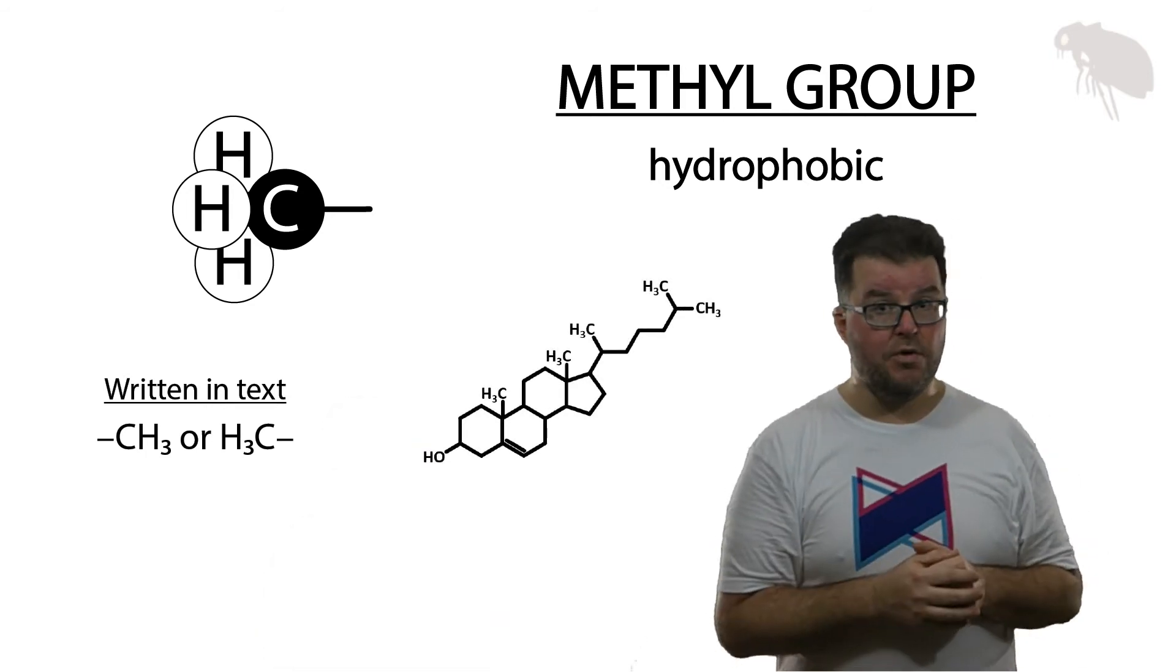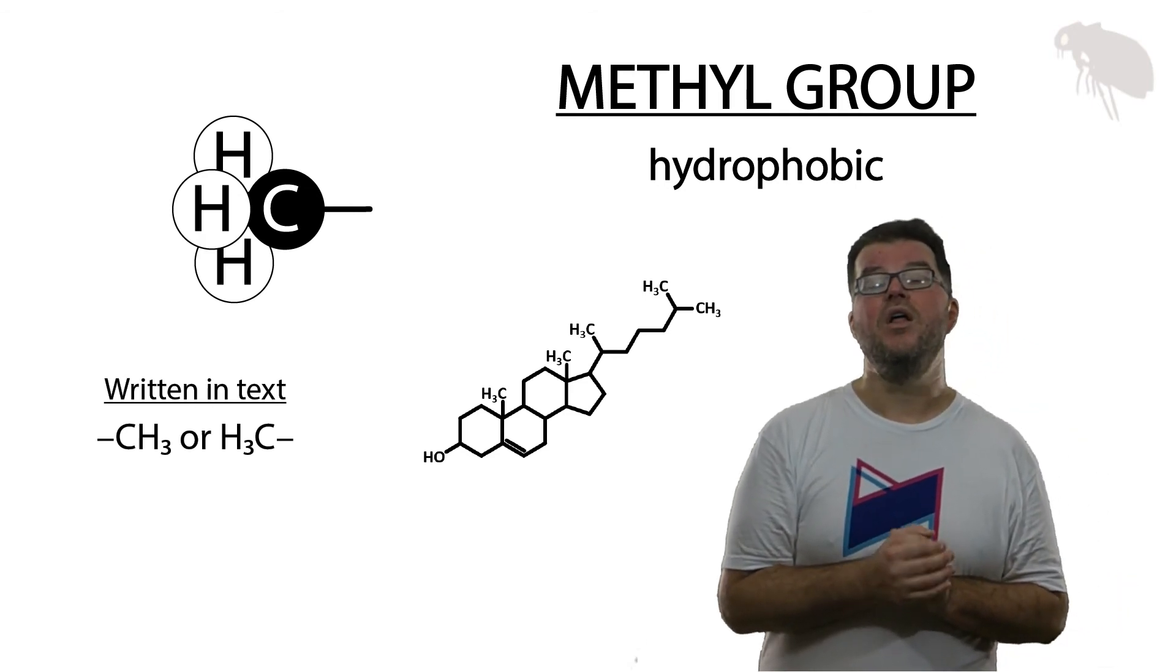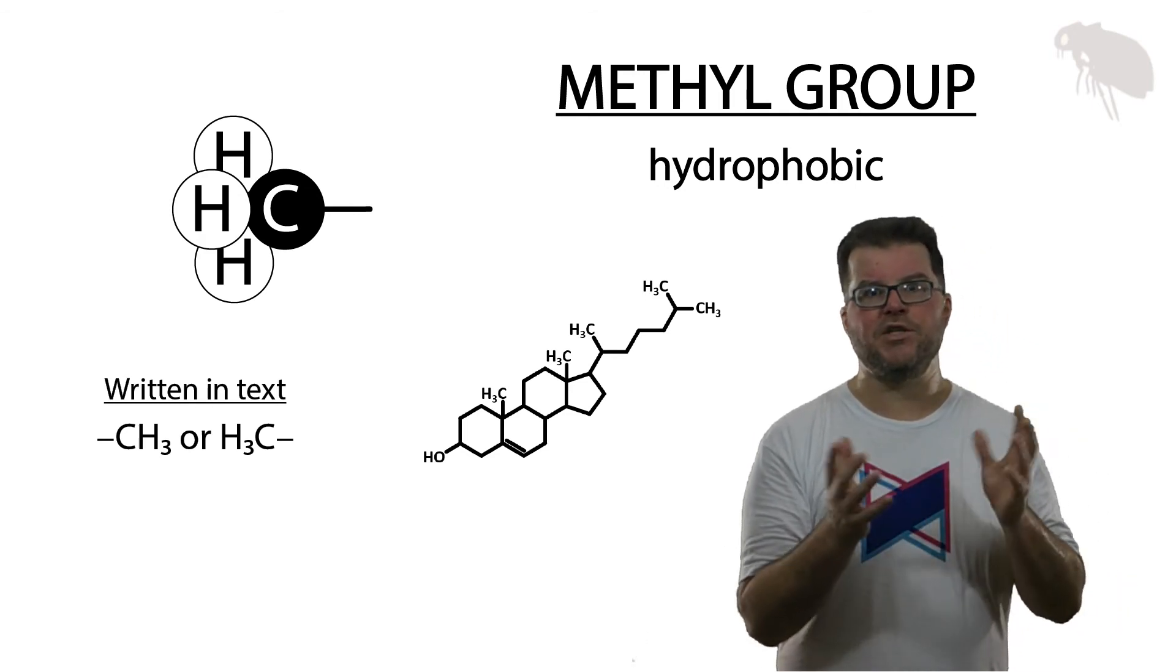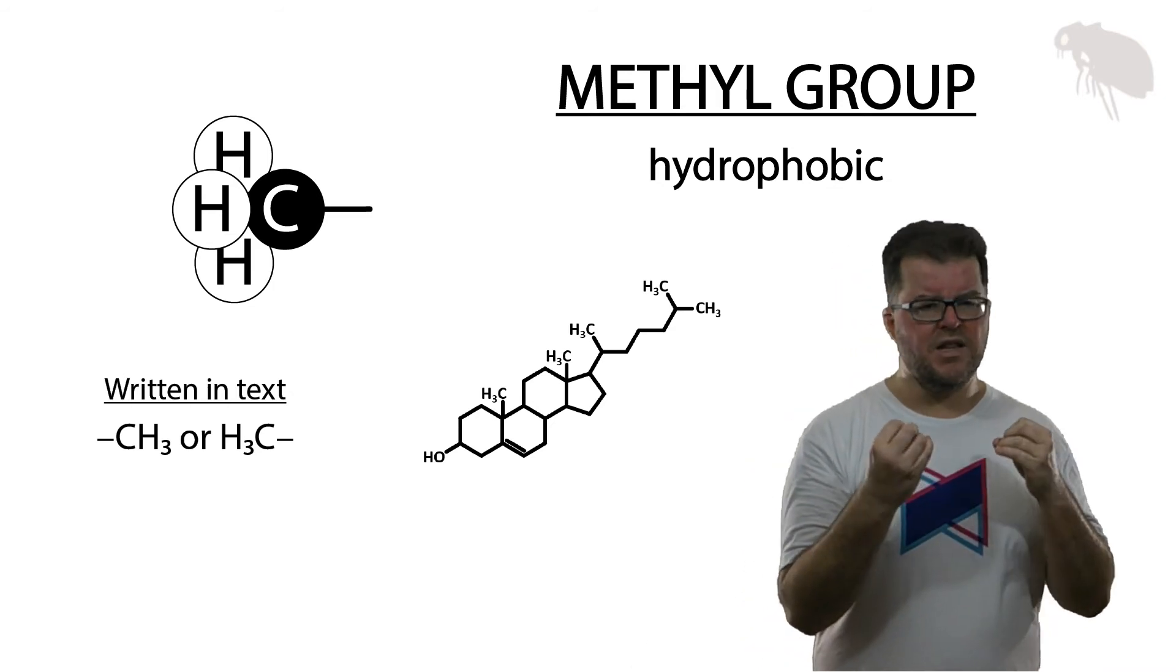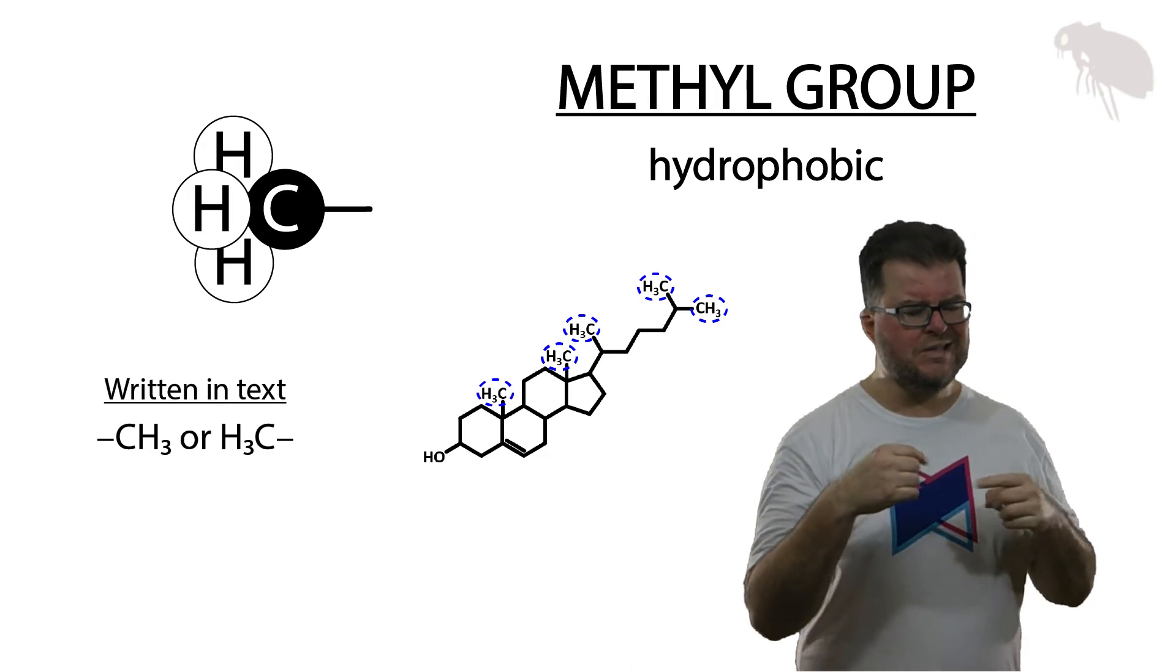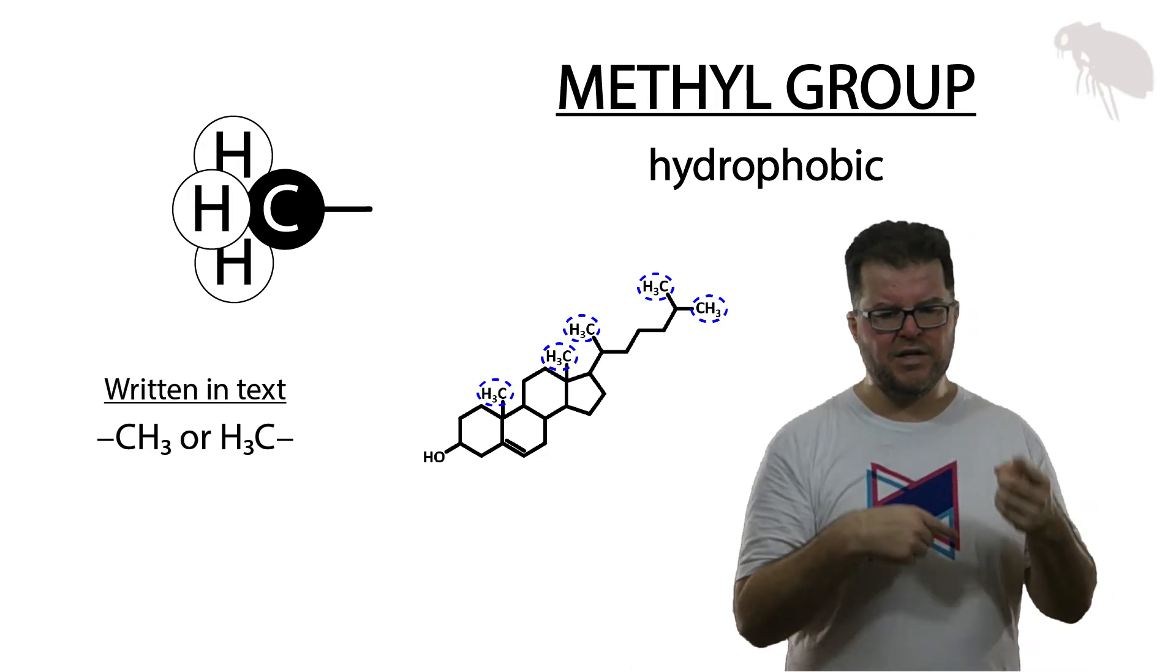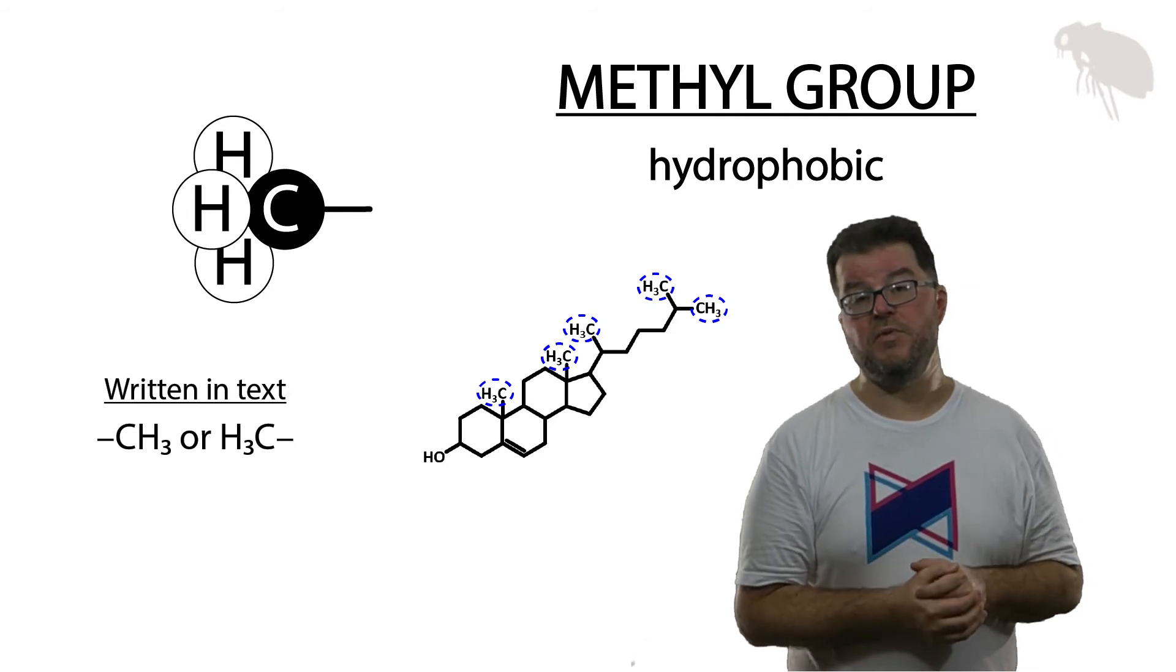Now here's an example of a molecule that contains a lot of methyl groups. We're looking here at cholesterol, the master steroid. Cholesterol, as you can see, has five methyl groups in its structure. So aside from the fact that it's almost entirely carbon and hydrogen to begin with, each of those areas with the methyl group is very hydrophobic.